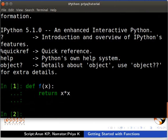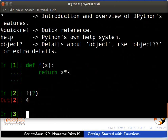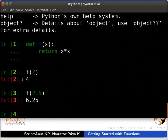Let us call the f of x with different arguments. Type f inside brackets 2, then f inside brackets 2.5. It returned 4 and 6.25 respectively.